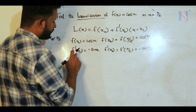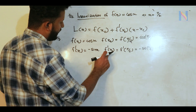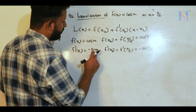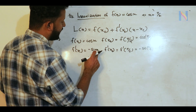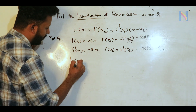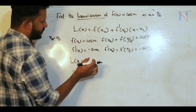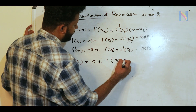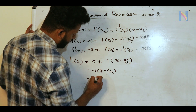f'(x) = -sin x. So f'(x₀) = -sin(5π/2) = -1. Therefore L(x) = f(x₀) + f'(x₀)(x - x₀) = 0 + (-1)(x - 5π/2). The answer is L(x) = -x + 5π/2, multiplying out gives minus x plus 5 by 2.